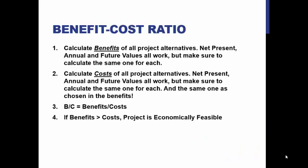The first thing we need to discuss is what the concept of a benefit-cost ratio is. You calculate the benefits of all project alternatives at a single point in time or an equivalent annual worth — you can calculate the net present value, the equivalent annual worth, or the future value. Just make sure to calculate the same one for each benefit. Basically, discount the benefits in time to a specific point in time. Then do the same thing for the costs. The benefit-to-cost ratio is benefits divided by costs. If the ratio is greater than one, the project is economically feasible.